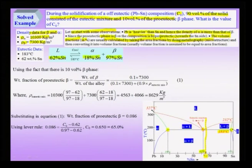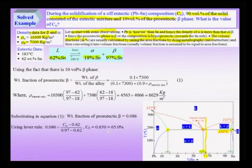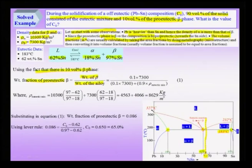We are interested in finding C0. The pro-eutectic phase is beta, so we convert 10 percent volume percent of the beta phase into a fraction of 0.1. The weight fraction of the pro-eutectic beta is the weight of beta divided by the weight of the alloy, which consists of the pro-eutectic beta phase and the eutectic mixture — 0.1 × 7,300 divided by the sum including 0.9 × density of the eutectic mixture.